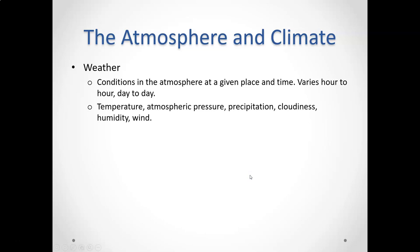Let's talk about the difference between weather and climate, because one of the things that you will often hear climate skeptics or climate change deniers say is: how can we have a warming climate if we have instances like two winters ago when we had a massive cold air moving in from the Arctic that gave us negative 50 degree wind chills and record-breaking cold? How can we have global warming when we have periods of really cold weather?